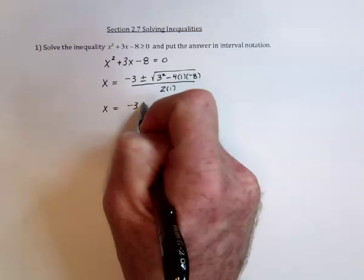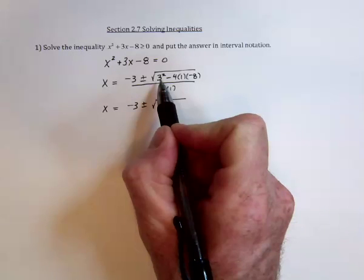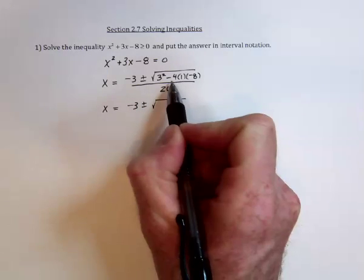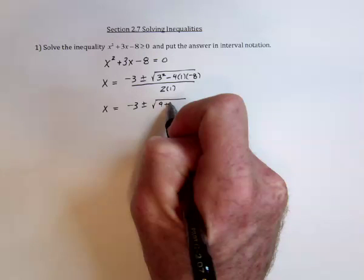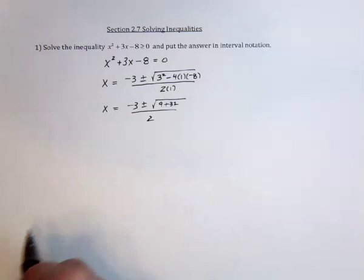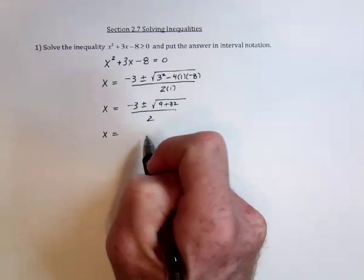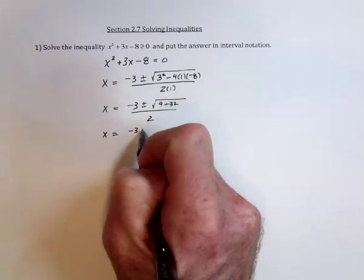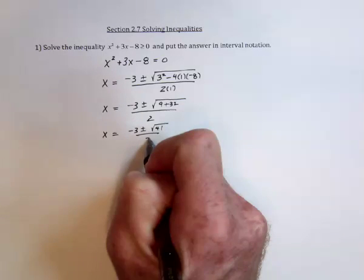So you've got a negative 3 plus or minus the square root of, well, this is 9 and this is going to be a positive 32. So we've got 9 plus 32 and then find the decimal answers. So we're going to have negative 3 plus or minus the square root of 41 divided by 2.